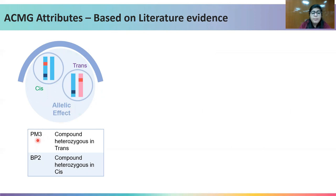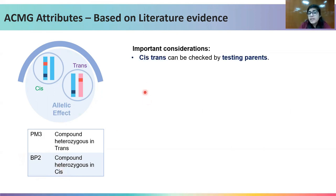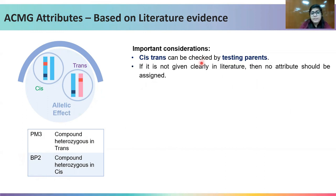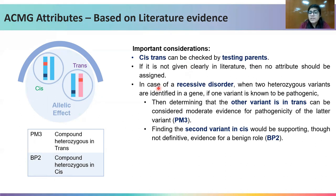In the case of allelic effect, PM3 is given when the newly found variation is present in trans to the earlier variation in the same gene, and BP2 is given when it is present in cis. Cis and trans can only be checked by testing the parents, and if not clearly given in the literature, one should not assign any attribute. In a recessive disorder, when two heterozygous variants are identified in a gene and one is already known to be pathogenic, determining the other variant in trans can be considered evidence of pathogenicity. But if the second variant is found in cis with the earlier pathogenic variation, the second variant would be benign.